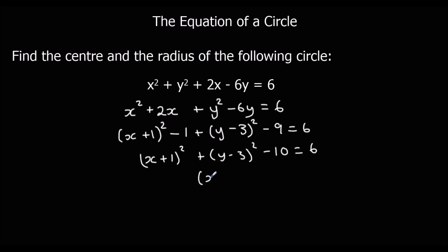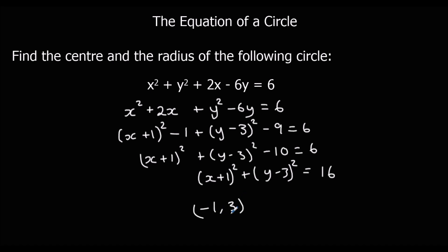That leaves us with x plus 1 squared plus y minus 3 squared minus 10 equals 6. Adding 10 to both sides, we now have it in the right form. The centre is (-1, 3) and the radius is square root of 16, which is 4.